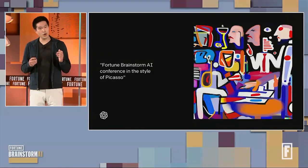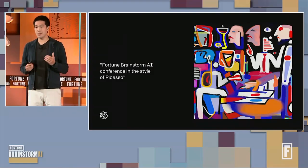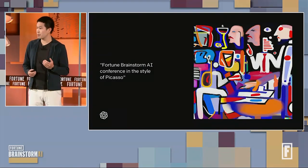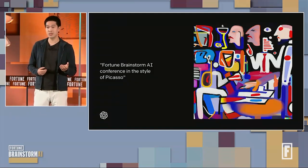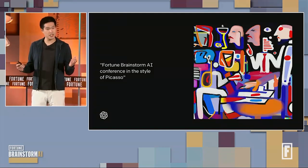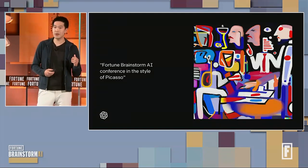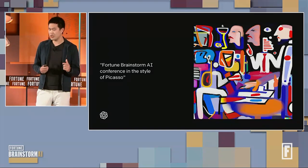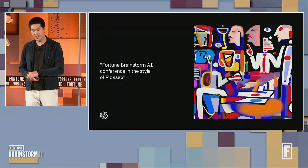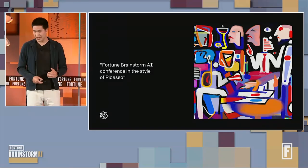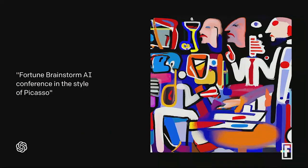At its core, DALL-E provides an interface where a user can provide a prompt — a sentence or a couple sentences of text — and DALL-E can render a high-resolution image that matches this prompt. So if I said something like, 'Fortune Brainstorm AI conference in the style of Picasso,' you might see an image like the one shown on the screens over here.